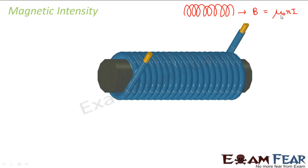μ₀ is the permeability of free space. Now when some material is inserted inside the solenoid — like a soft iron core to increase efficiency — suppose that material has a non-zero magnetization. That means this material has a net magnetic moment per unit volume. For certain materials, magnetization can be zero if the magnetic moments of all electrons cancel out, but here the material has non-zero magnetization.